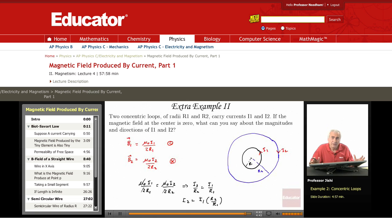So if the magnetic field is zero, then I2, if I know I1, I know R1 and R2, that fixes both the magnitude and direction of I2.